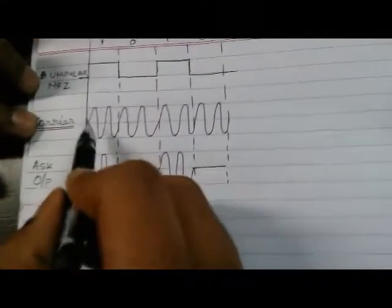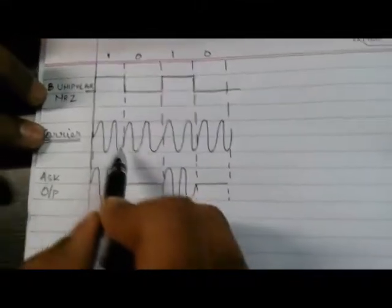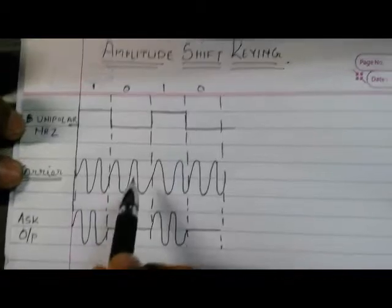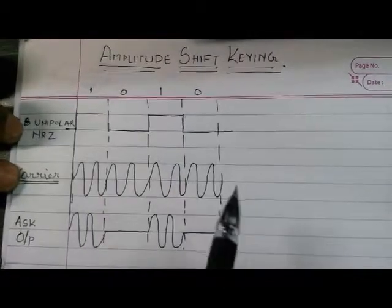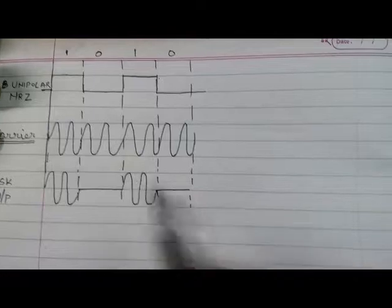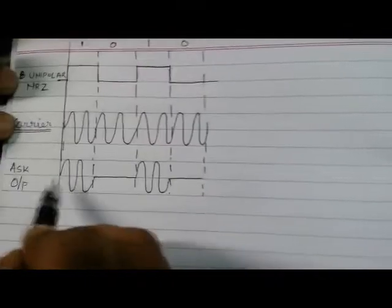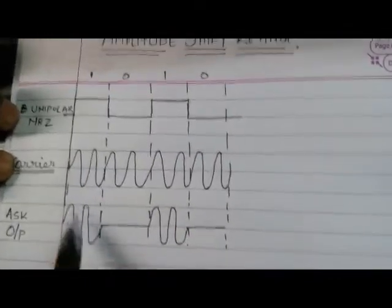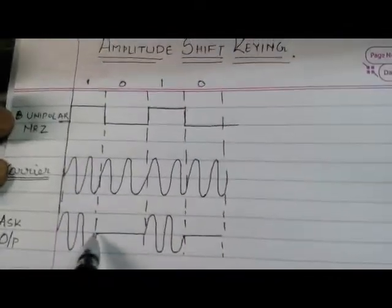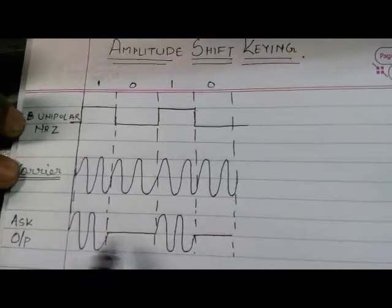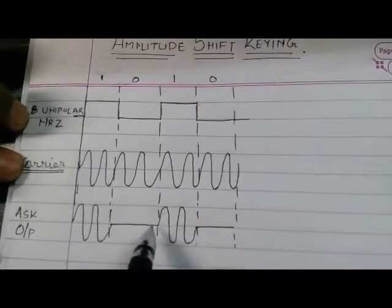Now the carrier is a sine wave having a particular frequency — in this case it will be 960 kHz. Now let us see the output of Amplitude Shift Keying. For logic 1 we get the carrier as it is at the output; for logic 0 we get nothing at the output, that is, the output is 0.